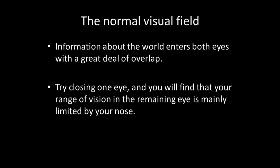Information about how we see the world enters both eyes with a great deal of overlap. If you try closing one eye, you'll find that the range of your vision in the remaining eye is mainly limited by your nose, and the image projected onto your retina can be cut down the middle with the fovea defining the very centre.